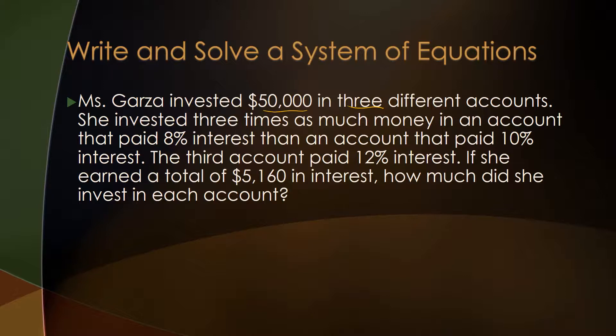She invested three times as much money in an account that paid 8%, three times more than one that paid 10%. And in the third account, she got paid 12%. So if she earned a total of $5,160, that's her total earnings, how much did she invest in each account?